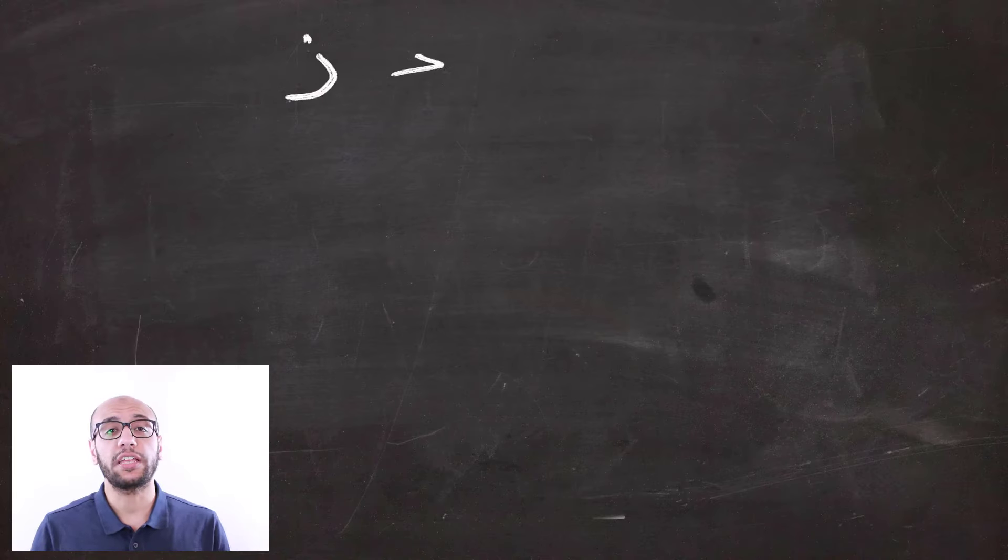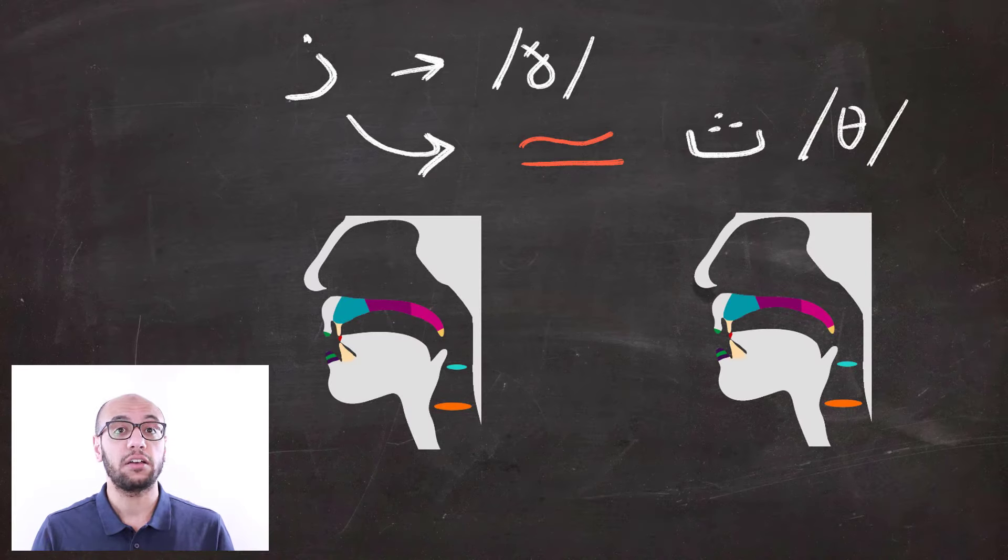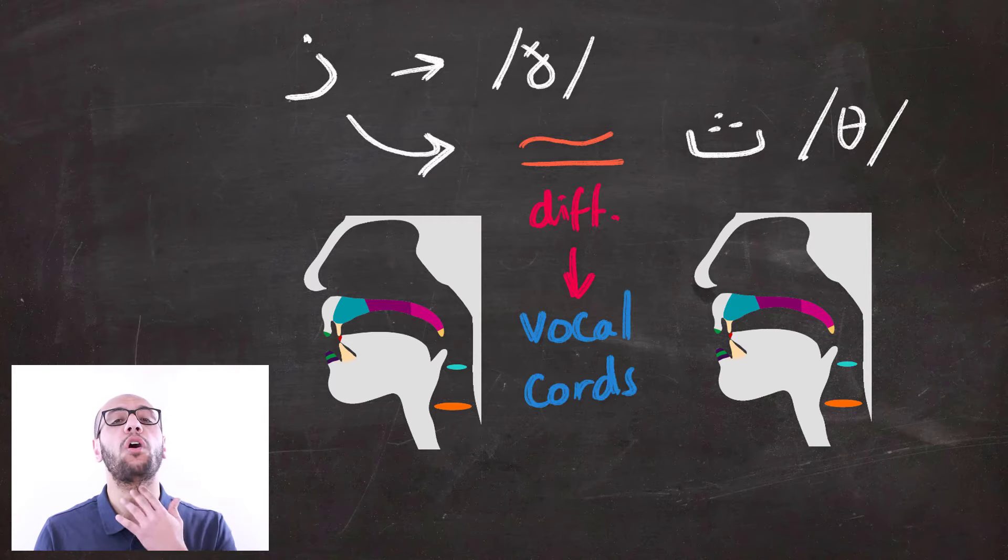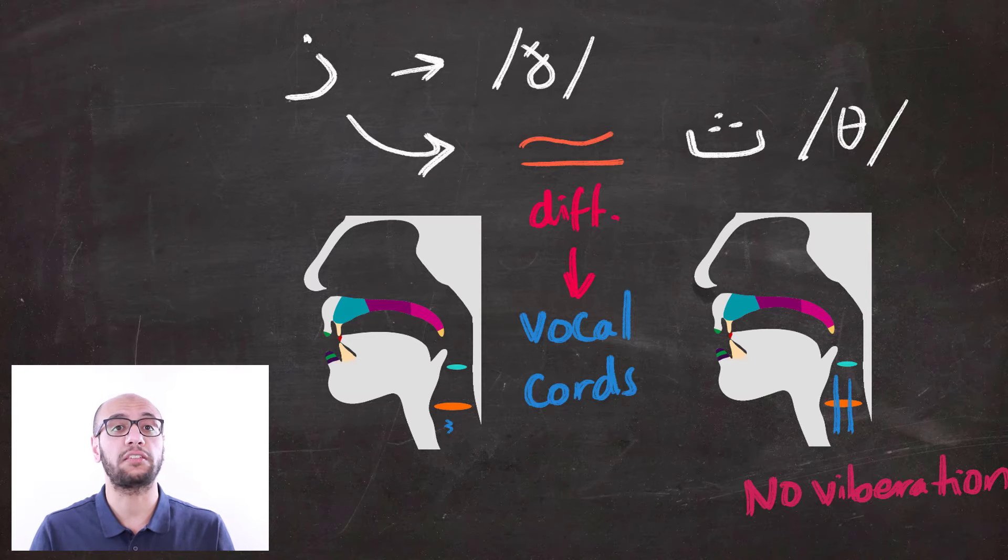Now, moving to the th sound. Th is actually the exact same sound with the exact same technique, with one single exception, and that is the vibration of the vocal cords. The sound is a voiceless sound, which means that you don't vibrate your vocal cords while you're pronouncing it or saying a word that contains the letter.